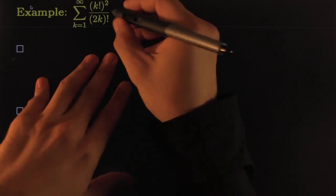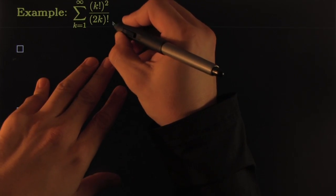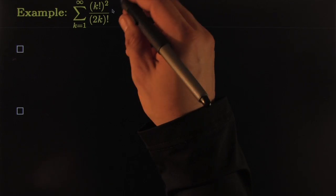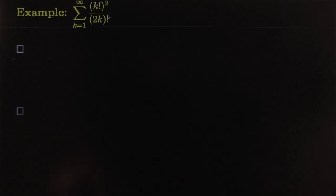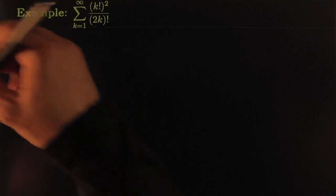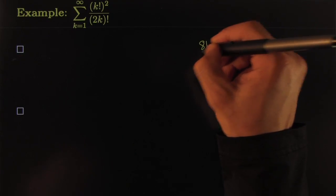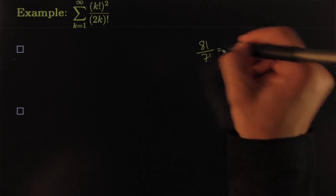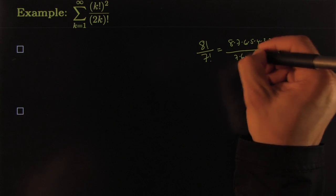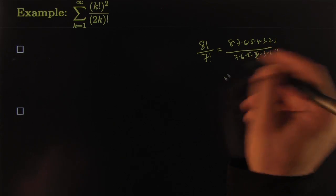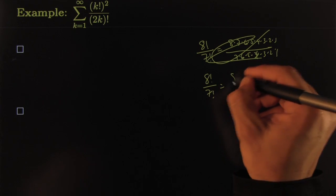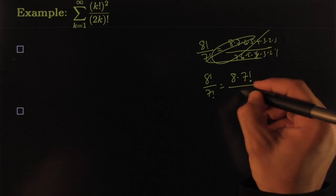These factorial things are lovely most of the time. When you have factorials, the ratio test seems to be a good weapon — and here's why. Suppose you have 8 factorial over 7 factorial. That means 8 times 7 times 6 ... times 1, all over 7 times 6 ... times 1. Instead of writing it that way, you can say it's 8 times 7 times all the numbers after 7, all over 7 factorial.